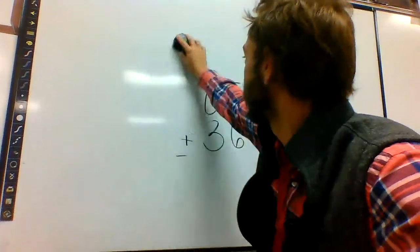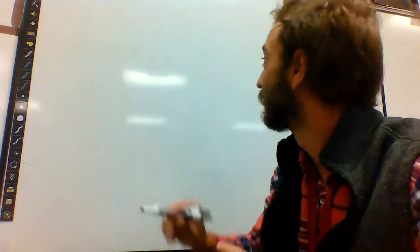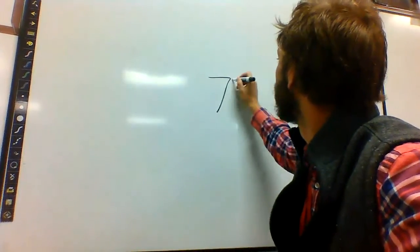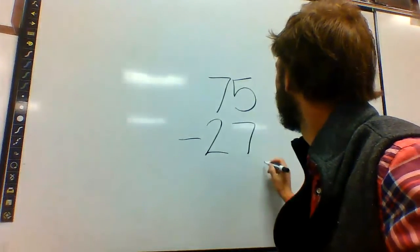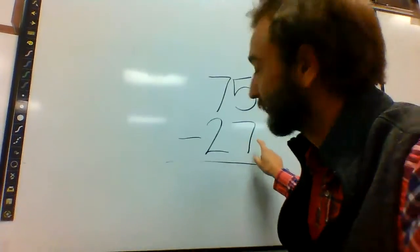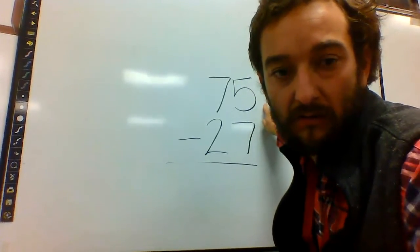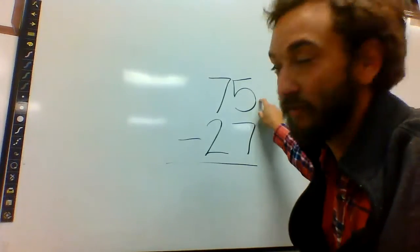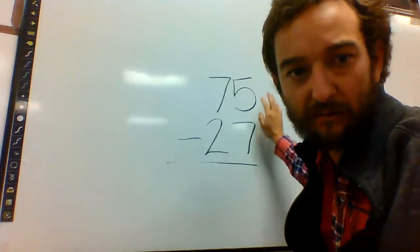Let's try a subtraction one. When your one's place, the bottom is smaller than the top, you have got to borrow. I've seen too many people try and do 7 minus 5. If the top is smaller, you've got to borrow.